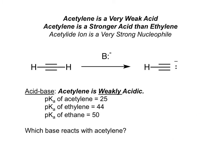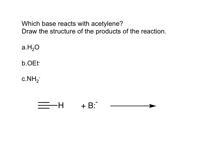Based on pKa, acetylene is a very weak acid. However, acetylene is a stronger acid than ethylene. Since acetylene is a very weak acid, its conjugate base — the acetylide ion — is a very strong base. The pKa of acetylene is 25.